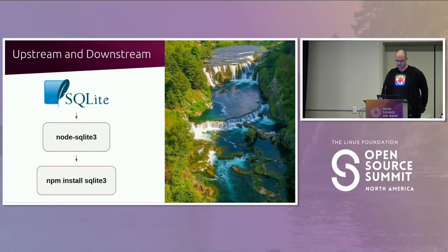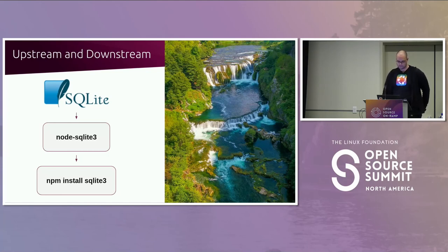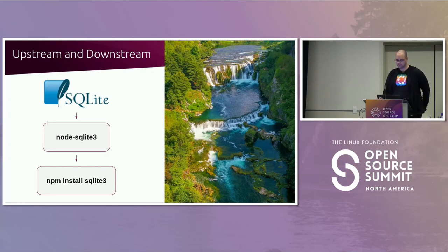Let's look at how CVEs can be used to communicate a vulnerability. Say we have an upstream software project like SQLite. Downstream of SQLite are projects like Node SQLite 3, and downstream of that is NPM, which distributes Node SQLite 3. If there's a vulnerability in SQLite, they will likely notify the Node version before publicly disclosing it, allowing Node SQLite 3 to patch the vulnerability first. Then users can check their packages by running npm audit to see if the CVE has been fixed.